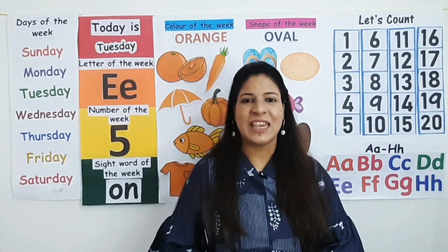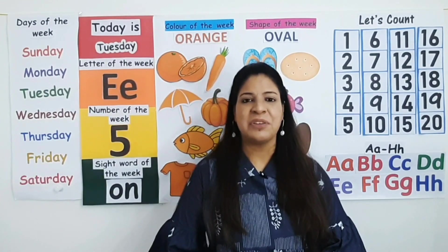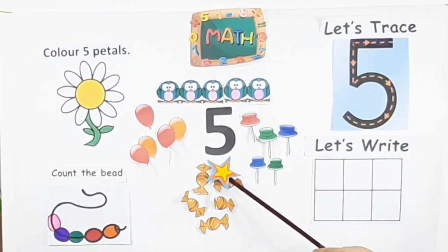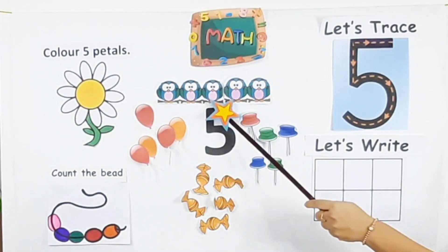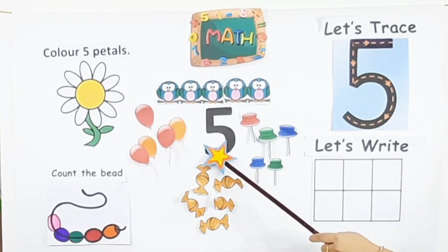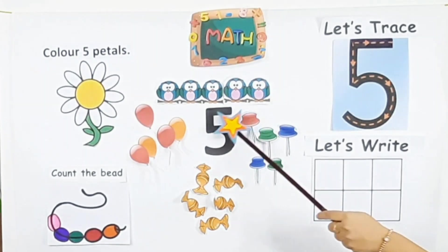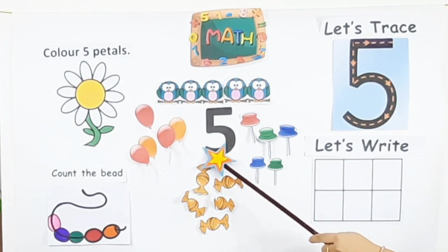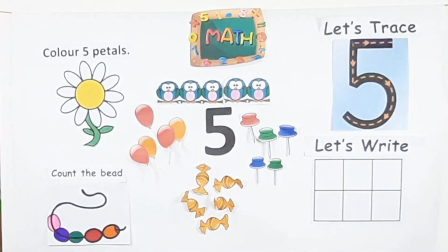So children, today is Tuesday and on Tuesdays we learn about a new number. Today we are going to learn all about number five. The formation of number five is: down and around, then you stop, finish the five with the line on top. Down and around, then you stop, finish the five with the line on top.